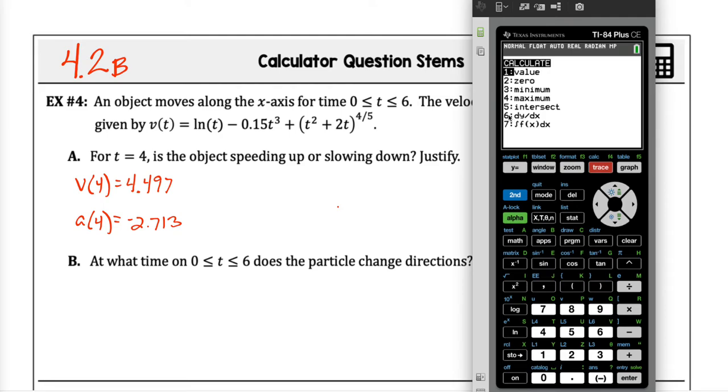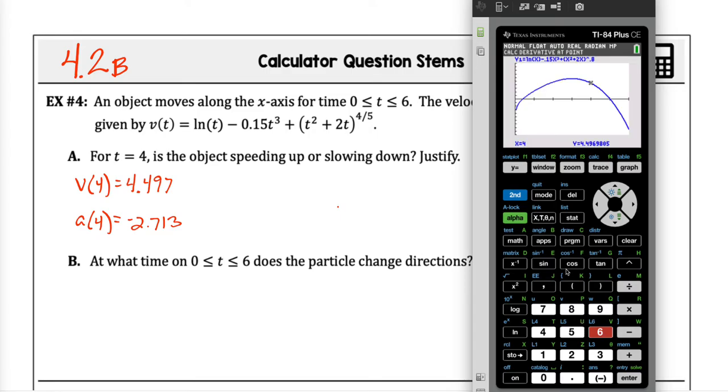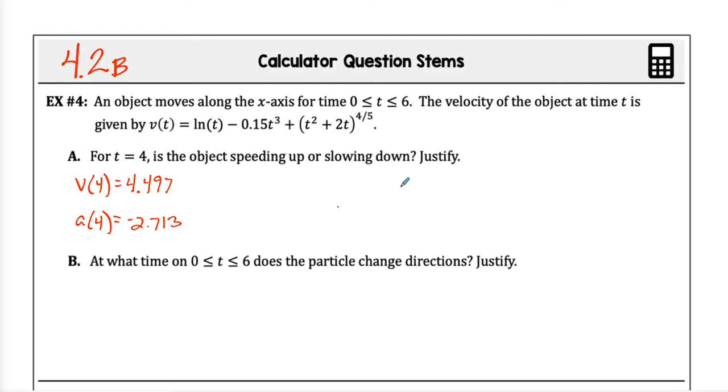Here's what we could have done from the beginning, but I wanted to show you guys how to graph a full derivative. What I could have done from the beginning is I did trace at time 4 to find the velocity at time 4, which we figured out was 4.497. Instead of me taking the time to graph the whole derivative, what I could have done is gone to the calculation menu and then just find the derivative at time 4 because that's the exact same thing we were looking for. What would we have answered for A anyway? Slowing down. We could have said this is greater than zero, this is less than zero. Slowing down.